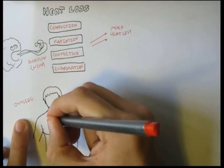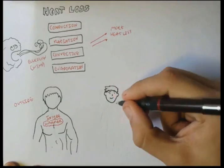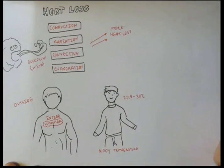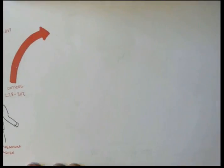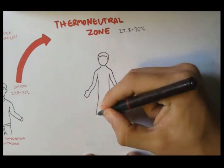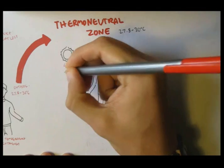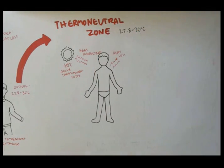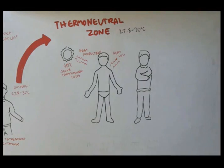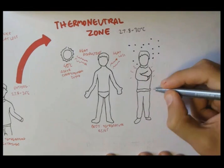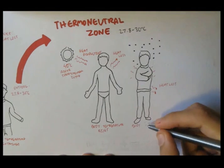The inside of the body is warmer than the outside. The body's internal temperature is easily maintained without any mechanisms if the temperature outside is between 27.8 to 30 degrees Celsius. This environmental temperature range is known as the thermoneutral zone, because it's neutral for the body. But if the outside is much higher than the thermoneutral zone, such as 40 degrees Celsius, there is obviously more heat being produced than heat being lost, causing a rise in internal body temperature. And if the temperature is much lower than the thermoneutral zone, it will cause more heat loss and no heat production, therefore a decrease in body temperature.